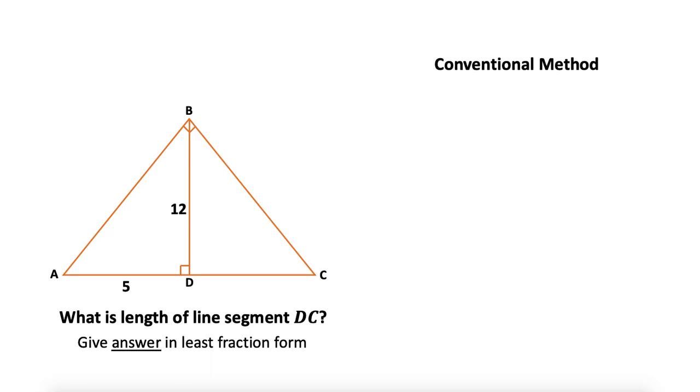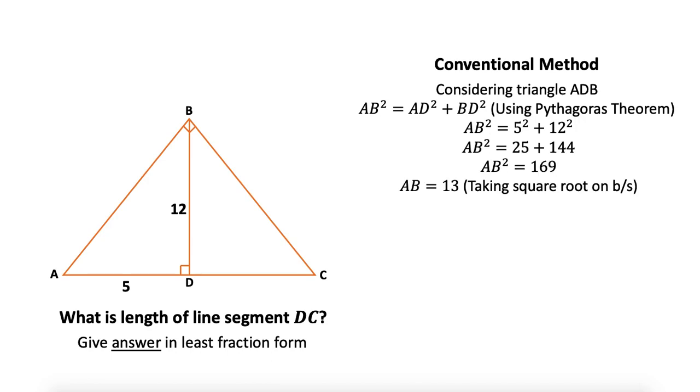First one is conventional method that involves Pythagoras theorem. If I consider triangle ADB using the Pythagoras theorem, I can find the value of AB. So AB² = 5² + 12², based on that AB = 13.